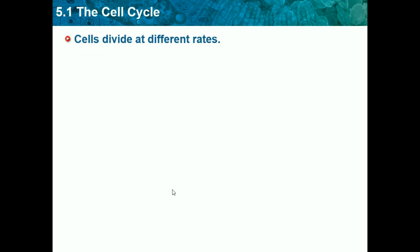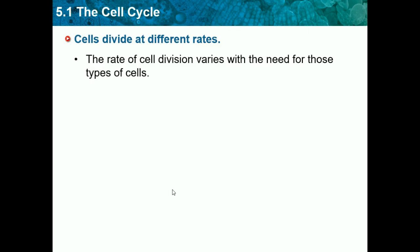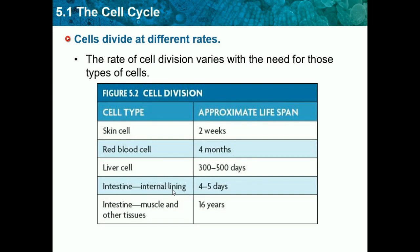Cells divide at different rates. Different types of cells divide at different speeds, and the rate of cell division varies with the need for those types of cells. Here's a chart showing which cells reproduce and how quickly. Skin cells live for approximately two weeks, so they must divide quickly to replace the dead ones. Red blood cells take about four months, so they also reproduce fairly quickly. But long-term cells like intestinal and muscle cells take a couple of years to die, so they take a long time to reproduce. For example, remember that skin cells divide very quickly — if you get a cut, your cells replace it fast.